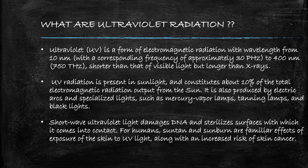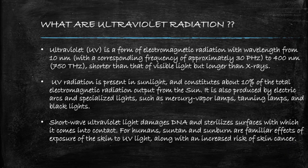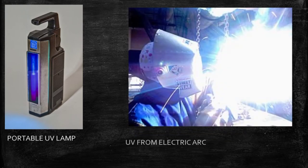Short-wave ultraviolet light damages DNA and sterilizes surfaces with which it comes into contact. For humans, suntan and sunburn are familiar effects of exposure of skin to UV light, along with an increased risk of skin cancer. The range of UV radiation is between 3 petahertz to 750 terahertz. Here are pictures showing a portable UV lamp and UV produced from electric arc.